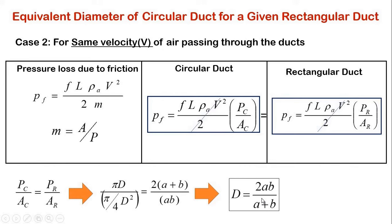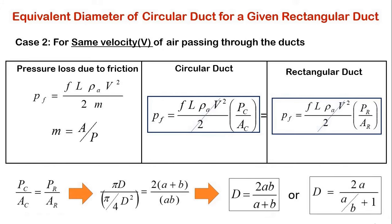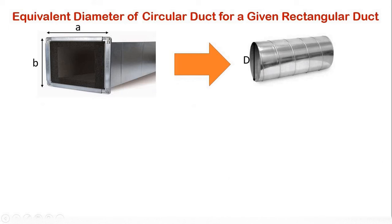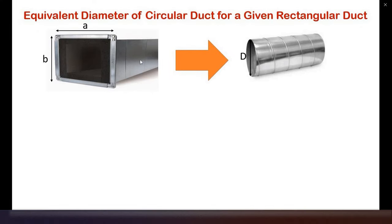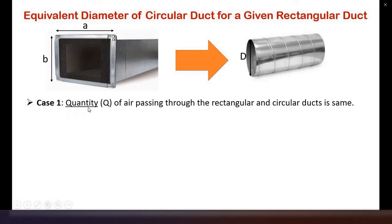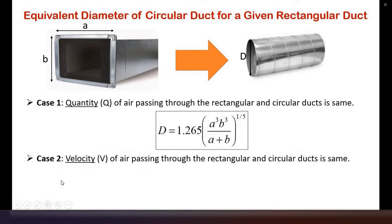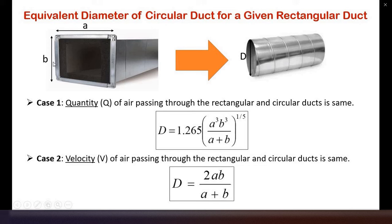If we factor out B from the numerator and denominator we get an alternate form of this equation. The ratio A/B is known as the aspect ratio. An important point is that the aspect ratio for a rectangular duct should not be greater than 8 in any case. In summary, if we need to keep the quantity Q of air the same through both ducts, we use the first formula with the 1.265 factor. If we need to keep the velocity V the same, we use the second formula D equals 2AB/(A+B), where A is the larger dimension and B is the shorter dimension of the rectangular duct.